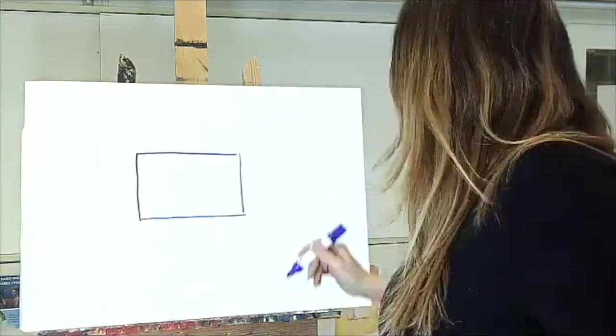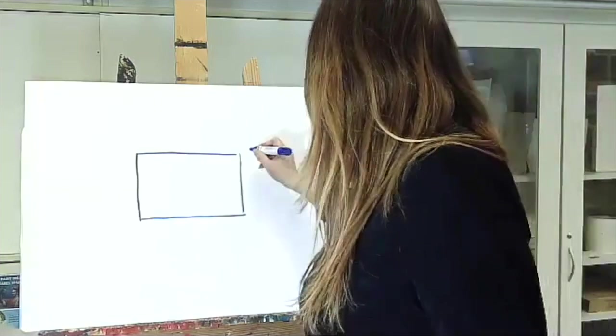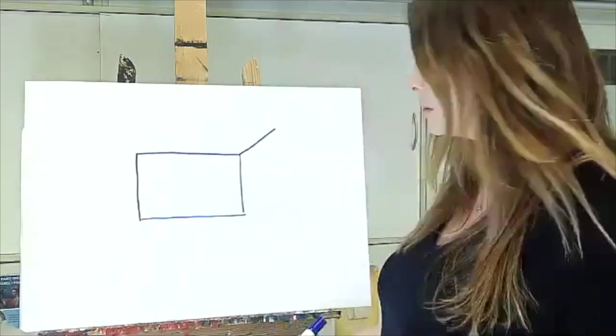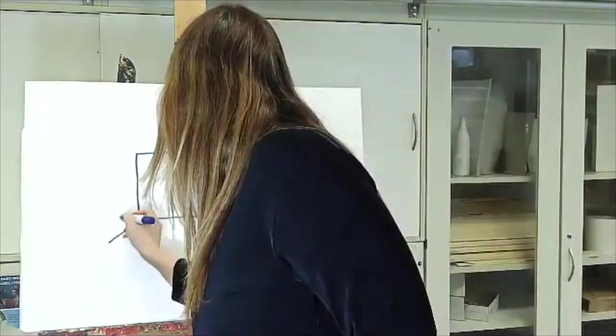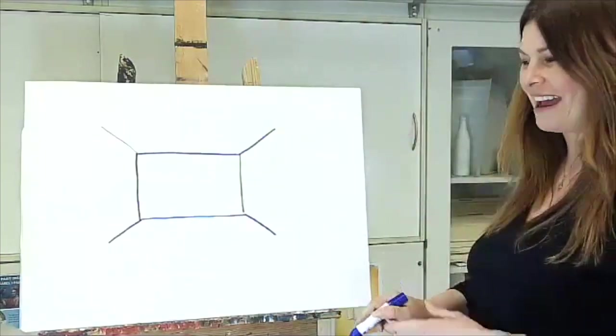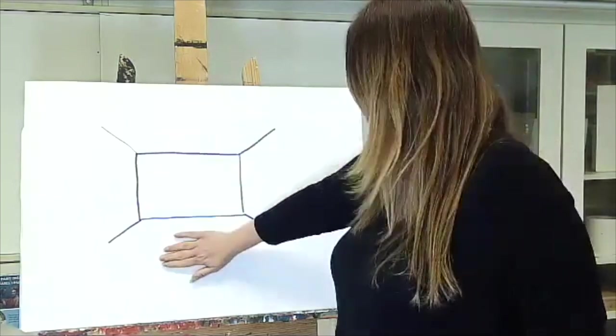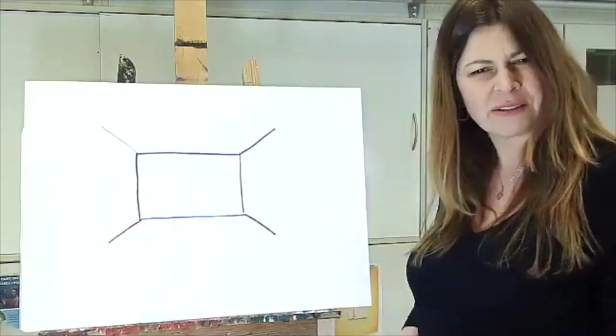Looked at it for a while. What if I drew a line coming out of the corners? And now I had a back wall, a ceiling, a floor, and the two side walls. Can you see that?